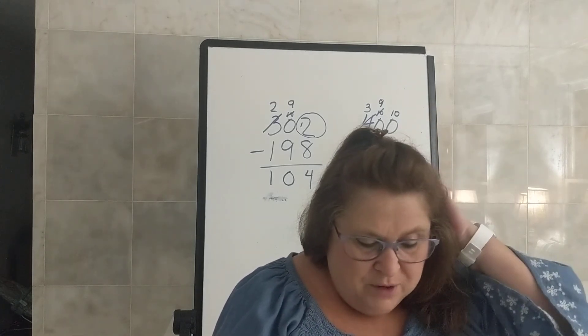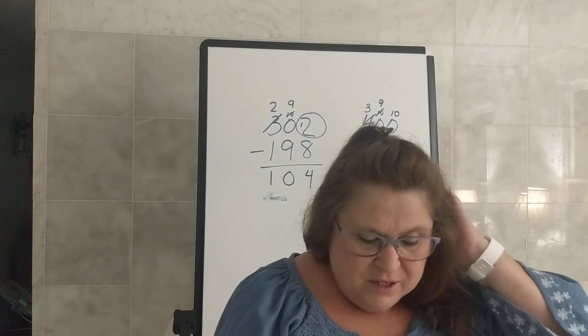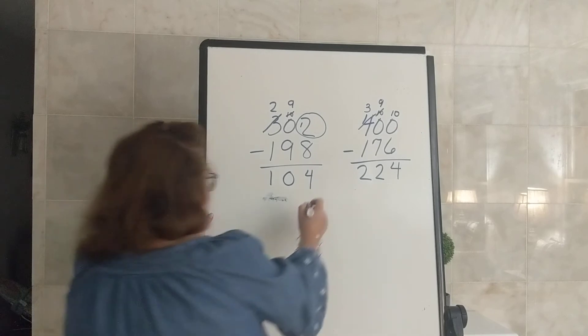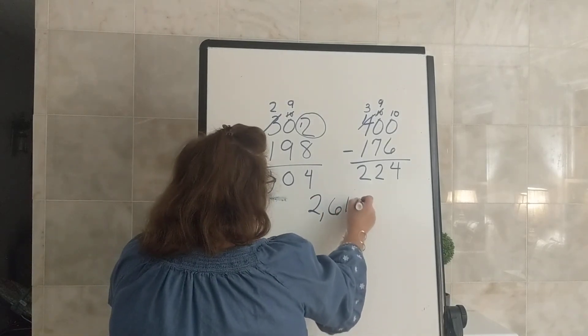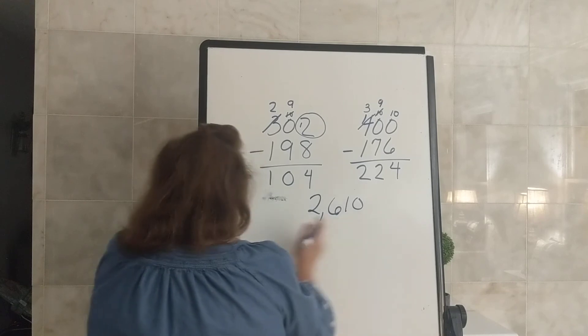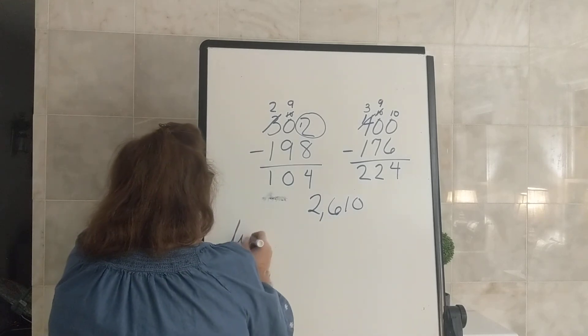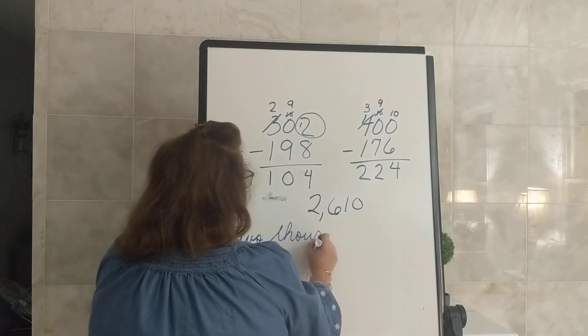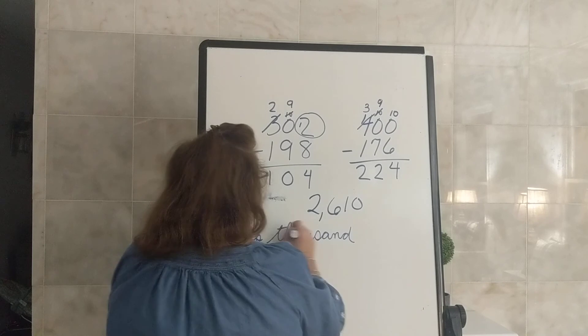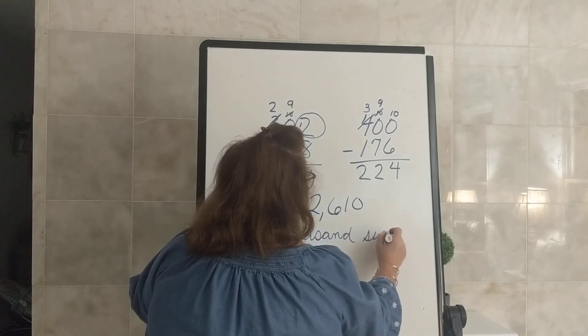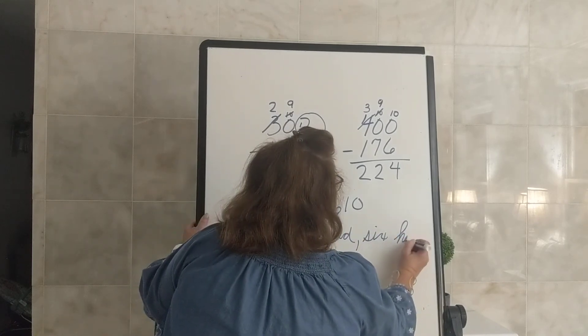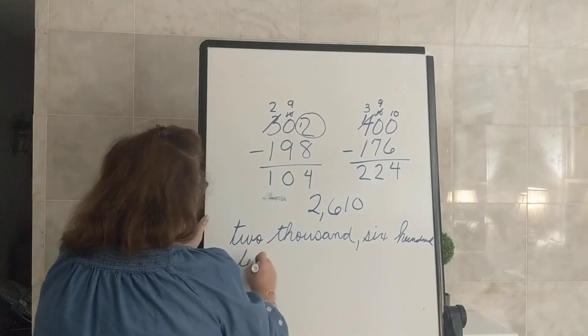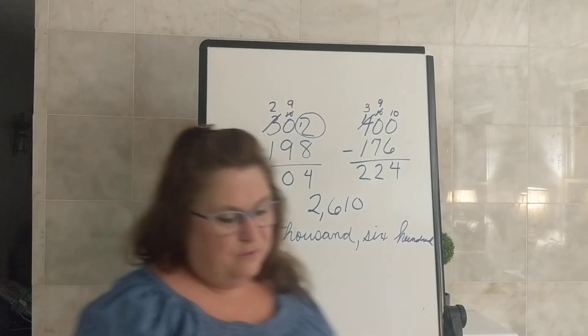Section number six, write the numbers in word form. So if you have 2, 6, 1, 0, that is 2,610. So we would just write 2,000 in word form, 600, and 10. You're just writing in word form.